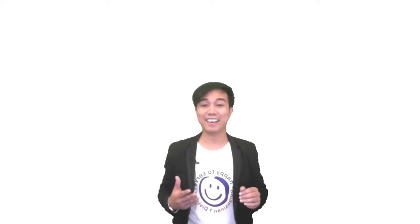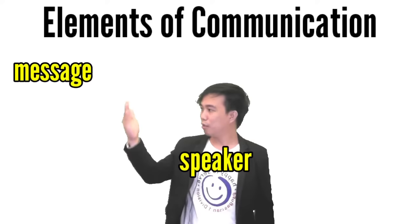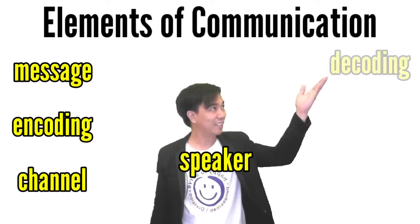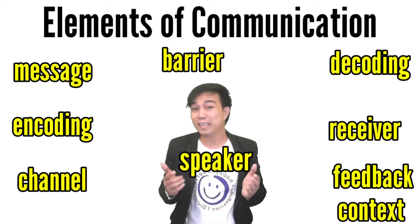In order for us to understand more, here are the elements of communication. We have the speaker, the message, the encoding, the channel, decoding, receiver, feedback, context, and the last one is the barrier. These elements will explain to us its mechanics and process.